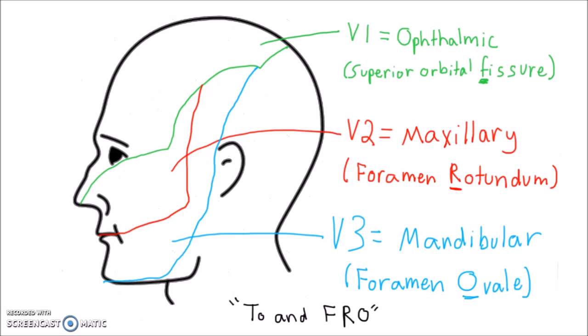Importantly, the ophthalmic area includes the superior nasal mucosa and the conjunctiva and cornea of the eye.